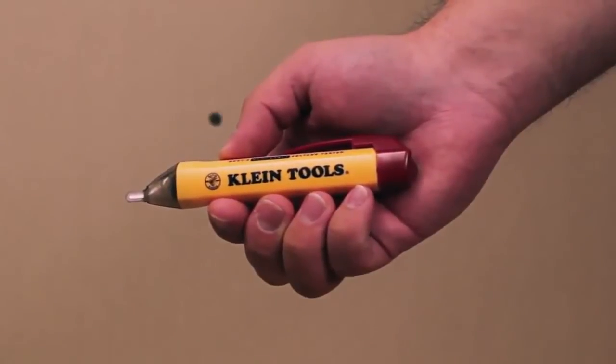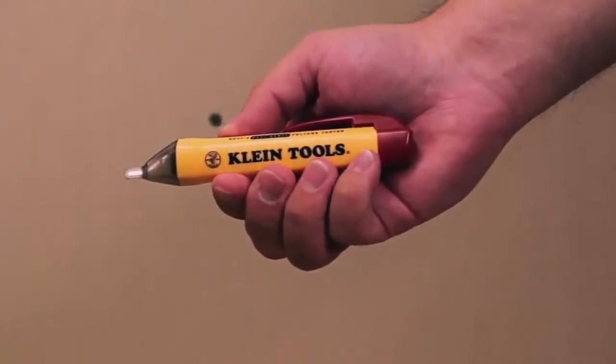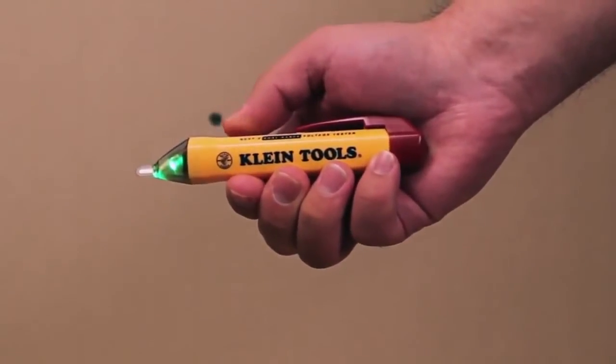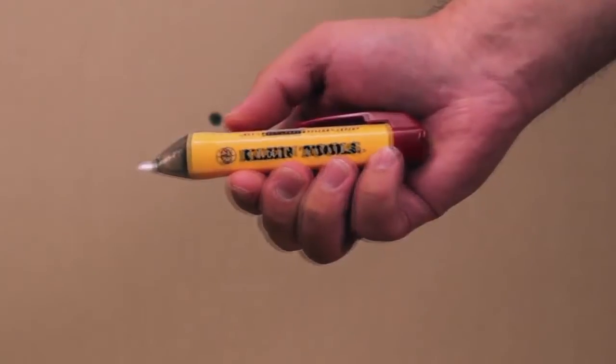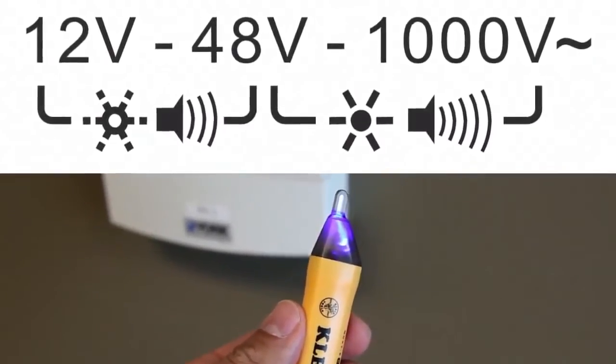Klein Tools is proud to introduce the NCBT2 Dual Range Non-Contact Voltage Tester. The NCBT2 is designed to detect and indicate both standard voltage between 48 and 1000 volts AC and low voltage between 12 and 48 volts AC.